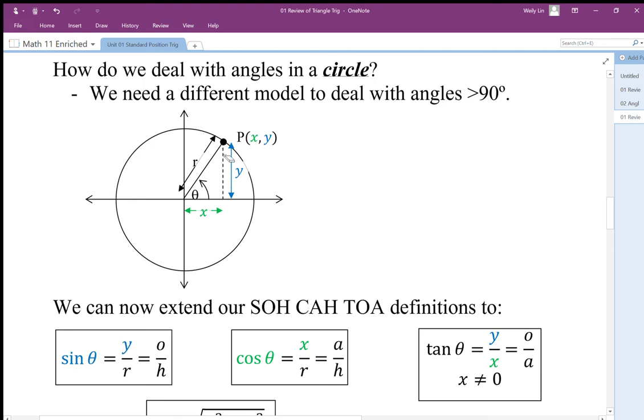For cosine, we're going to change it from adjacent over hypotenuse to the x position, the horizontal, divided by the radius. That's very similar to adjacent over hypotenuse. With tan, we're going to change it to y over x. Well, y over x is still slope.